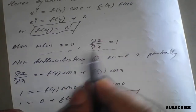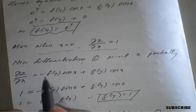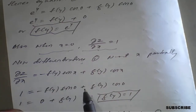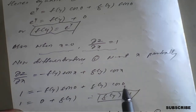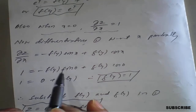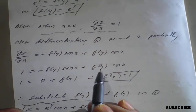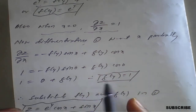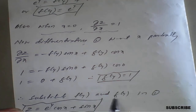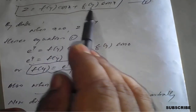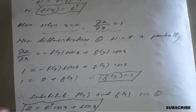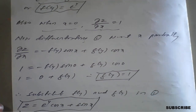Applying x = 0 and ∂z/∂x = 1: 1 = −f(y)sin(0) + g(y)cos(0). Since sin(0) = 0 and cos(0) = 1, this gives g(y) = 1. Substituting f(y) = eʸ and g(y) = 1 back into equation one, the final solution is z = eʸcos(x) + sin(x). This completes the solution for this homogeneous partial differential equation.